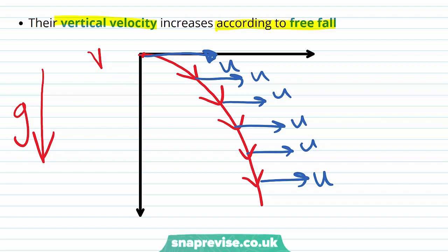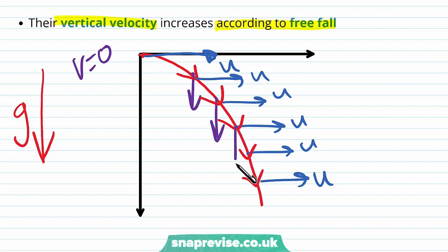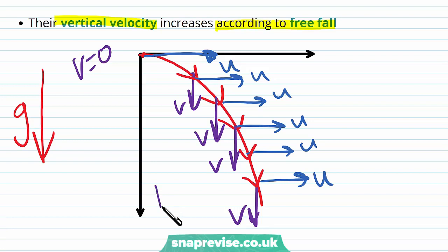The initial velocity in the vertical direction is zero. However, throughout its motion, the projectile will accelerate vertically downwards, so its vertical velocity is going to increase. And we can find the value of this vertical velocity at any point in time throughout its motion.